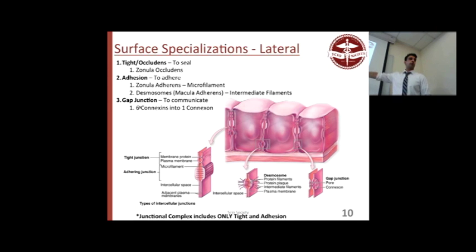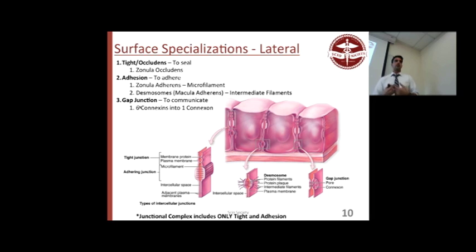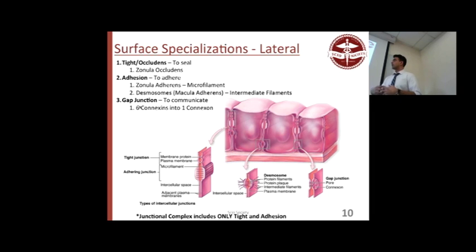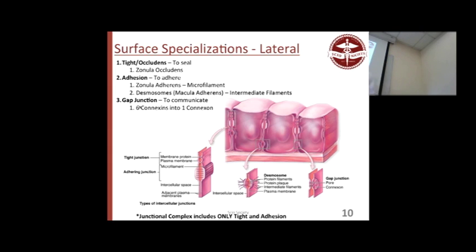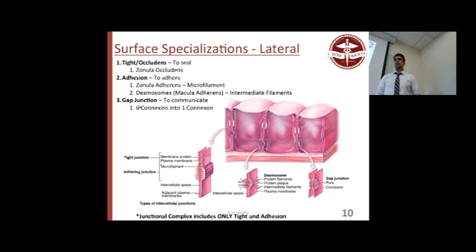Surface specializations — the junctions. Tight junctions give you the seal between cells on the apical surface; they're your occluding junctions and seal the epithelial cells so nothing passes between them. The more seals, the tighter the junction; fewer seals, more permeable. Adhesion junctions give you the ability to contract and move together. These are done by zonula adherens, which have microfilaments — actin. On the other hand, macula adherens, which are your spot or patch junctions — your desmosomes — have intermediate filaments. Actin for zonula adherens, intermediate filaments for desmosomes.